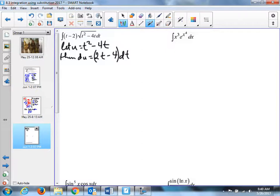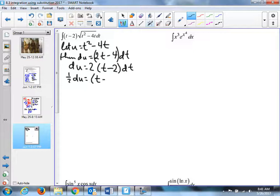So when I factor out the number 2, I'm going to just pull it out as a half on the other side. So 1 half du is t minus 2 dt. I am ready to substitute. I've got all the ingredients to replace.